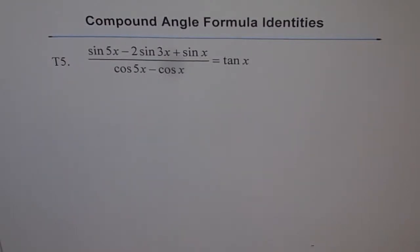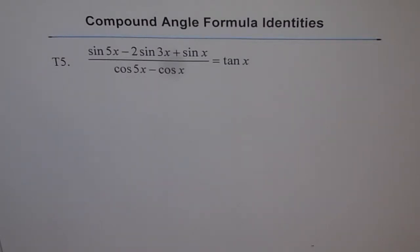Compound angle formula identities. These are thinking problems and they are very typical questions. I would like you to go through them very carefully, observe the video twice and then understand the strategy. At times you may have to refer to some other video to understand the concepts. So here is the thinking problem, T5.